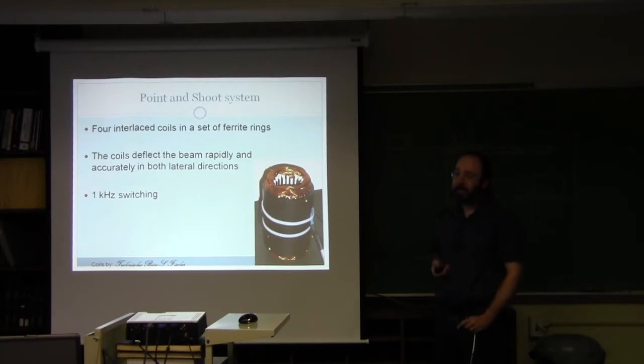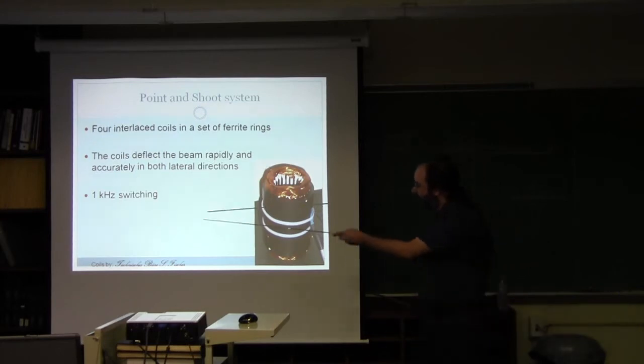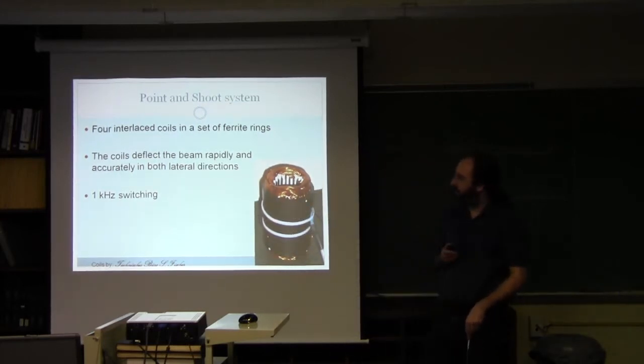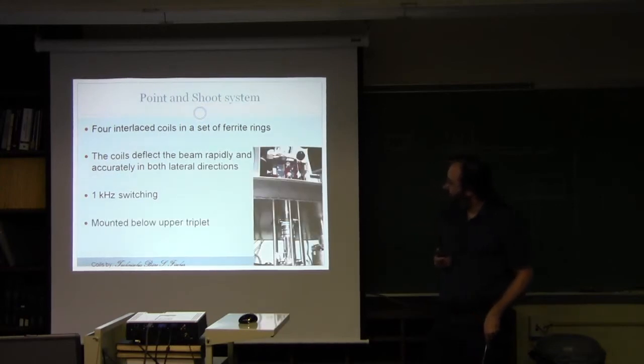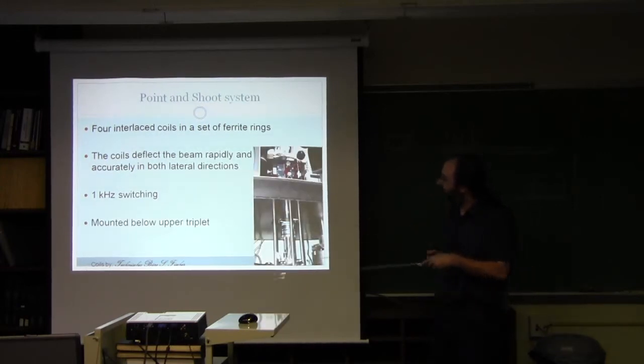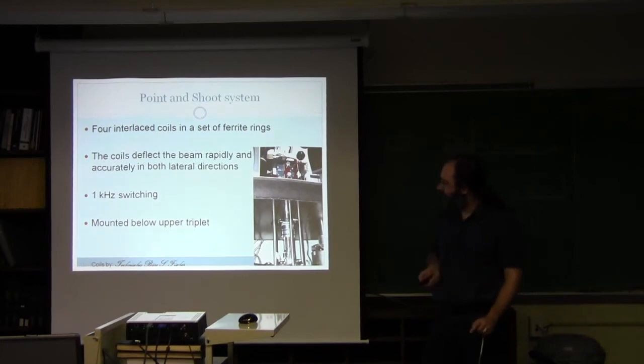Now that we know where the cells are, we need to shoot them. So we have a point-and-shoot system, which Gerhard talked about on the first day. This is a magnetic system with coils that can deflect the beam in both directions very rapidly. This means that you can go to a different position every millisecond or so. They're mounted below the upper triplet on the microbeam 3 endstation.